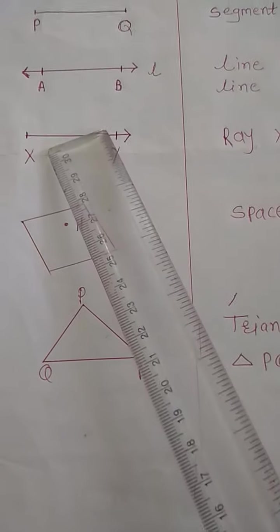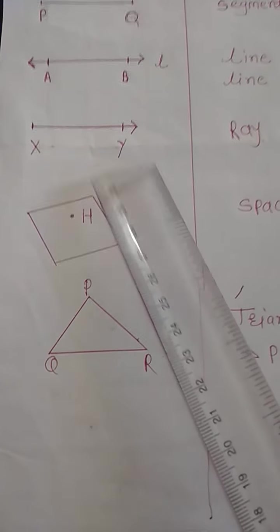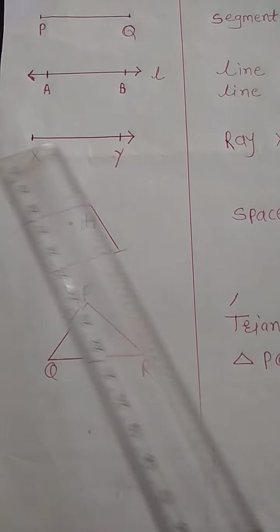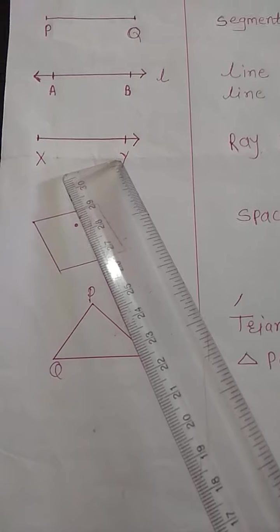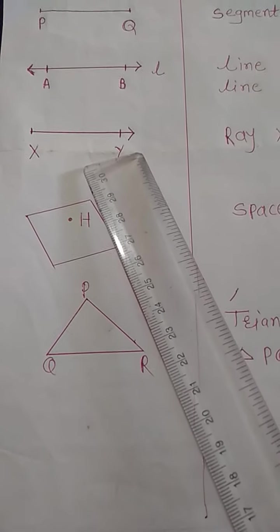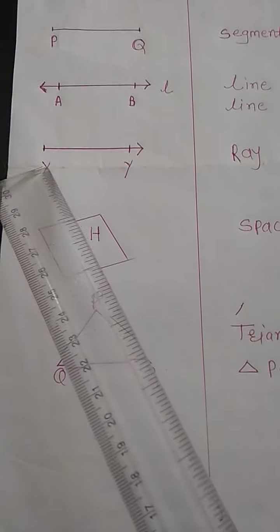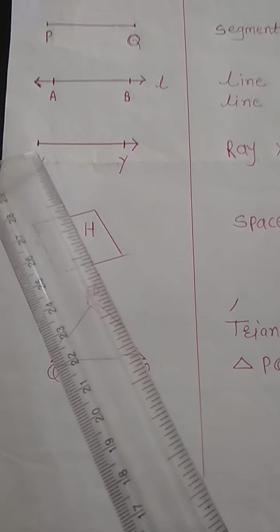A ray is a part of a line. It starts at one point and goes forward continuously in the same direction. The starting point of a ray is called its origin.